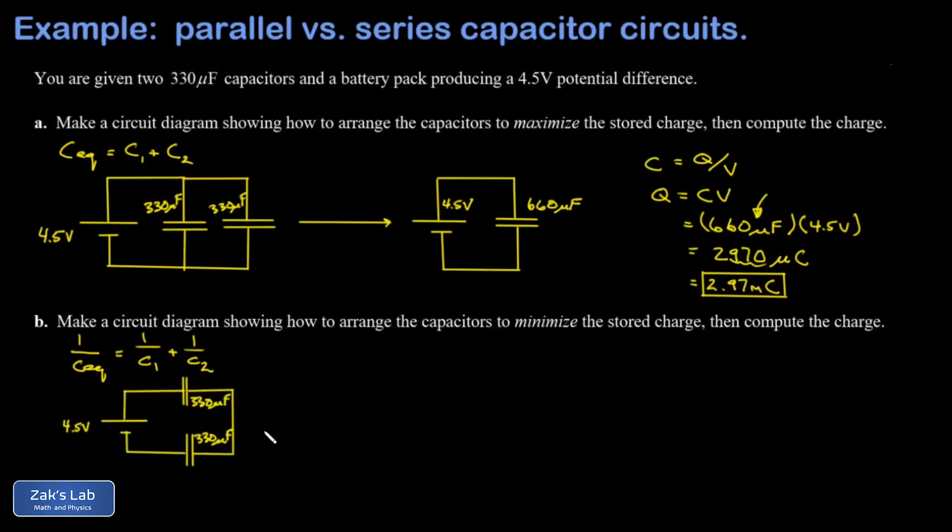So there's a reasonable diagram of this circuit. And then we have to do the calculation. One over the equivalent capacitance is going to be one over 330 plus another one over 330, and that's just two over 330. When I take the reciprocal of this, I get 330 over two, and that's 165 microfarads.